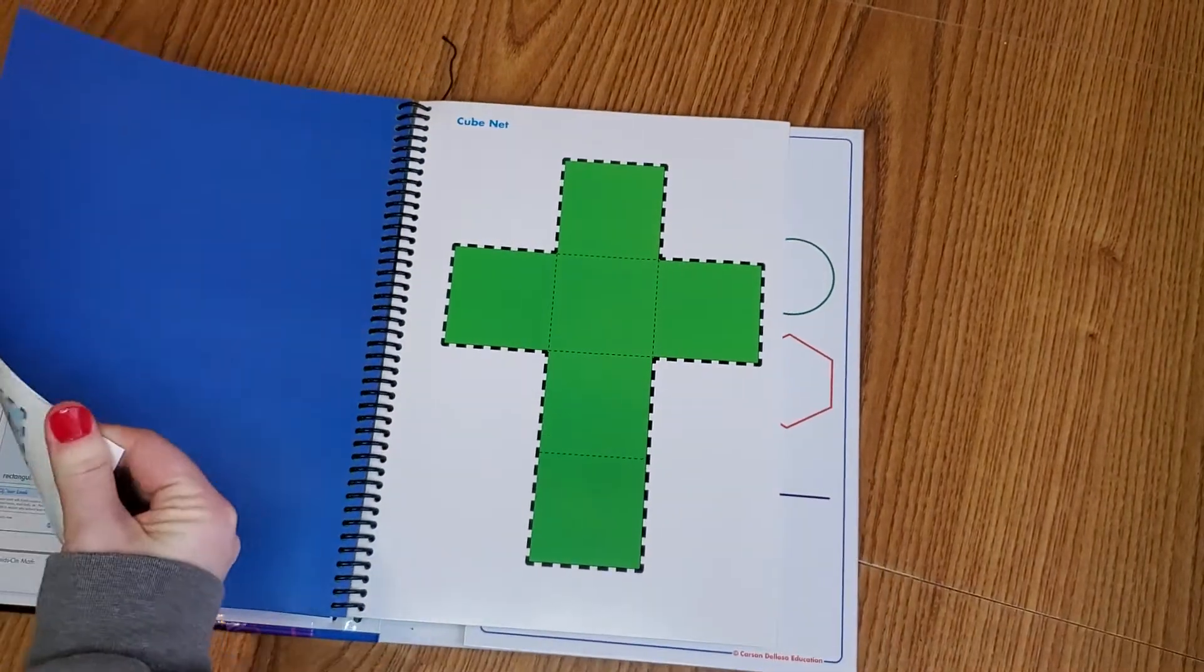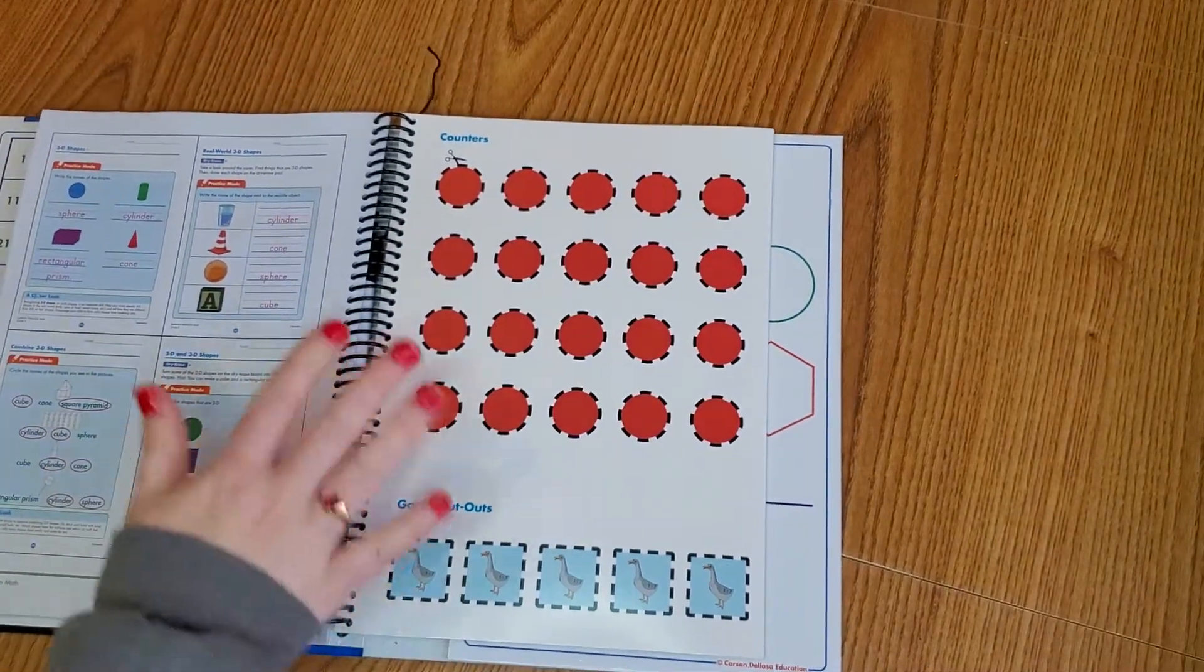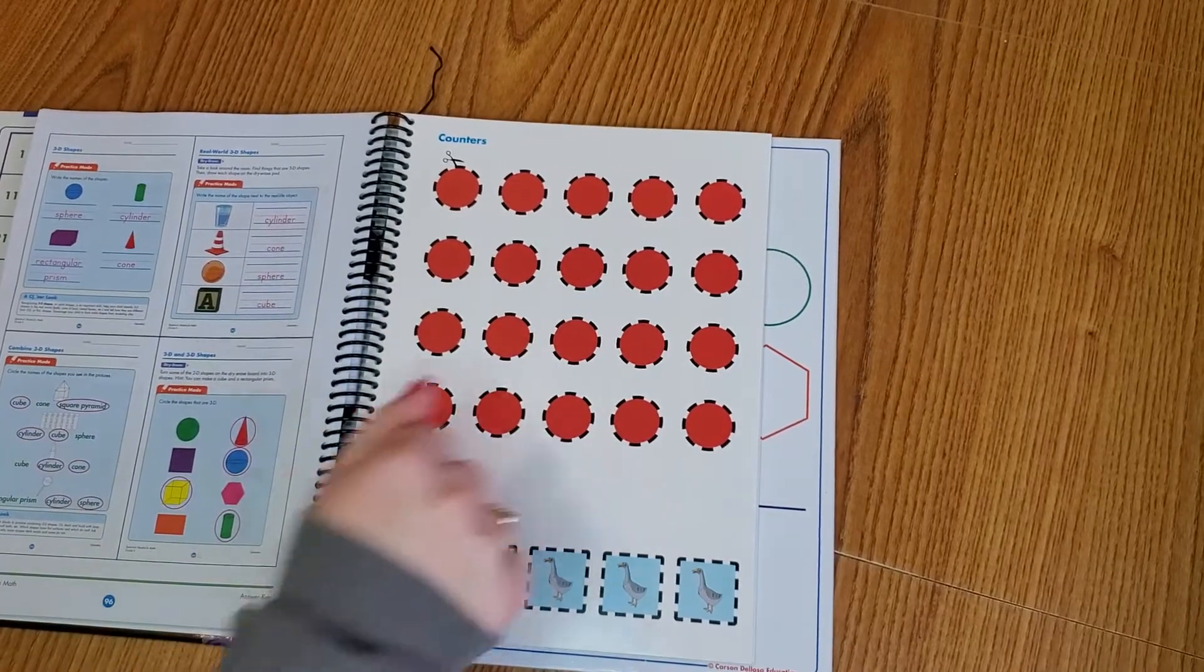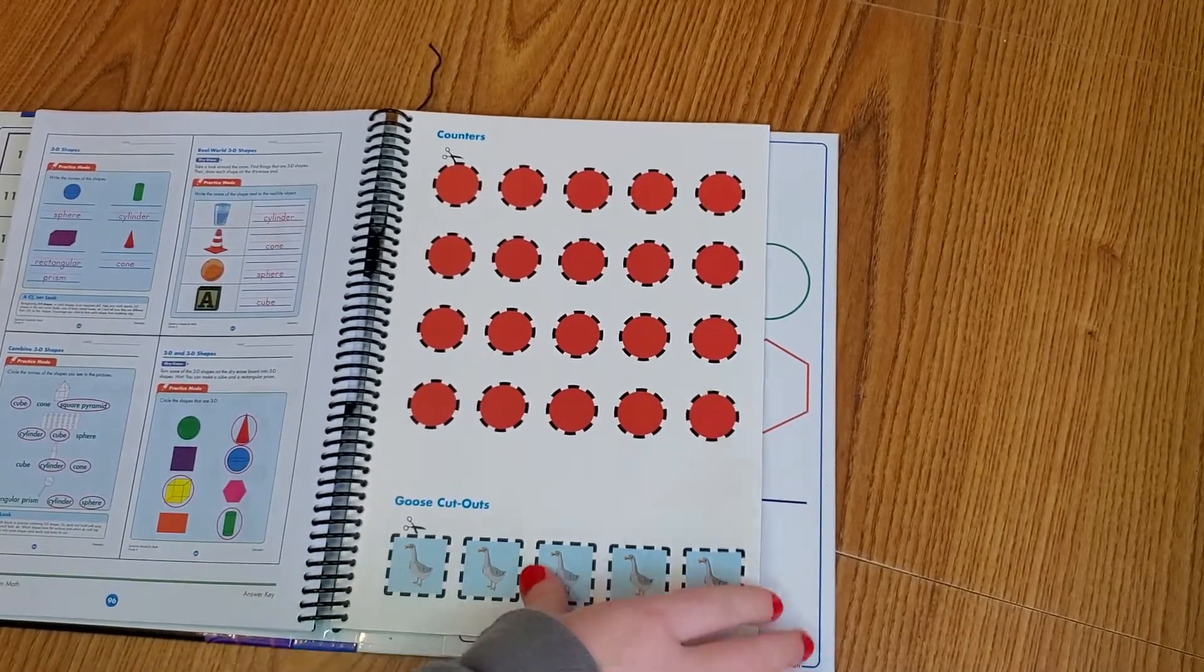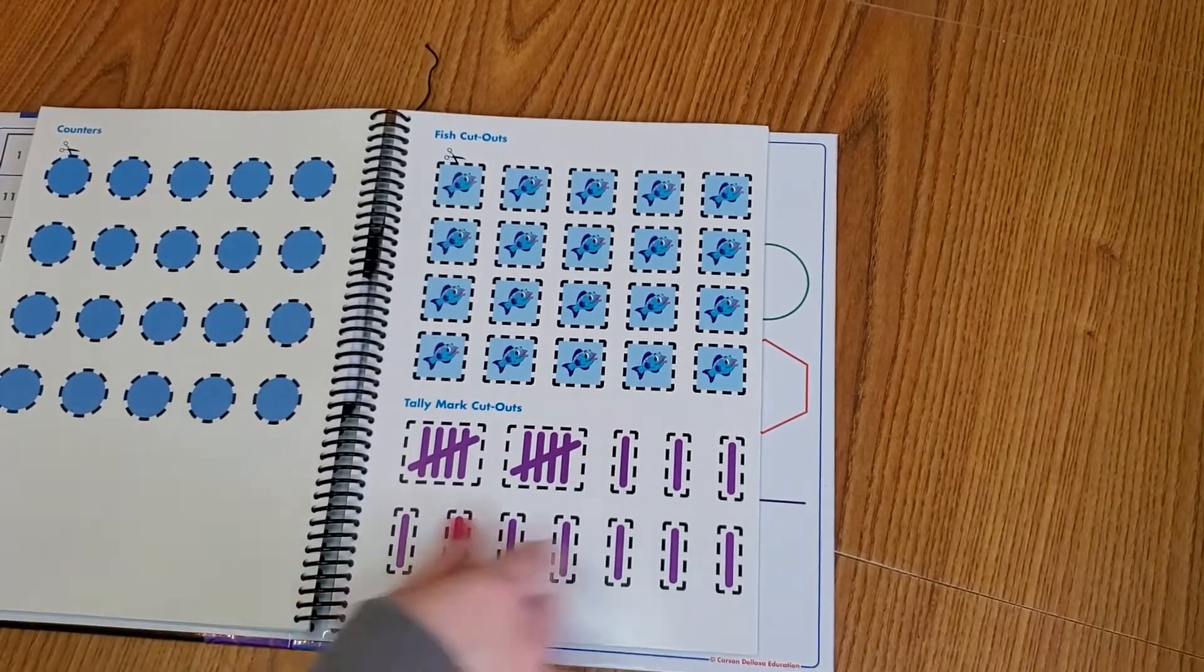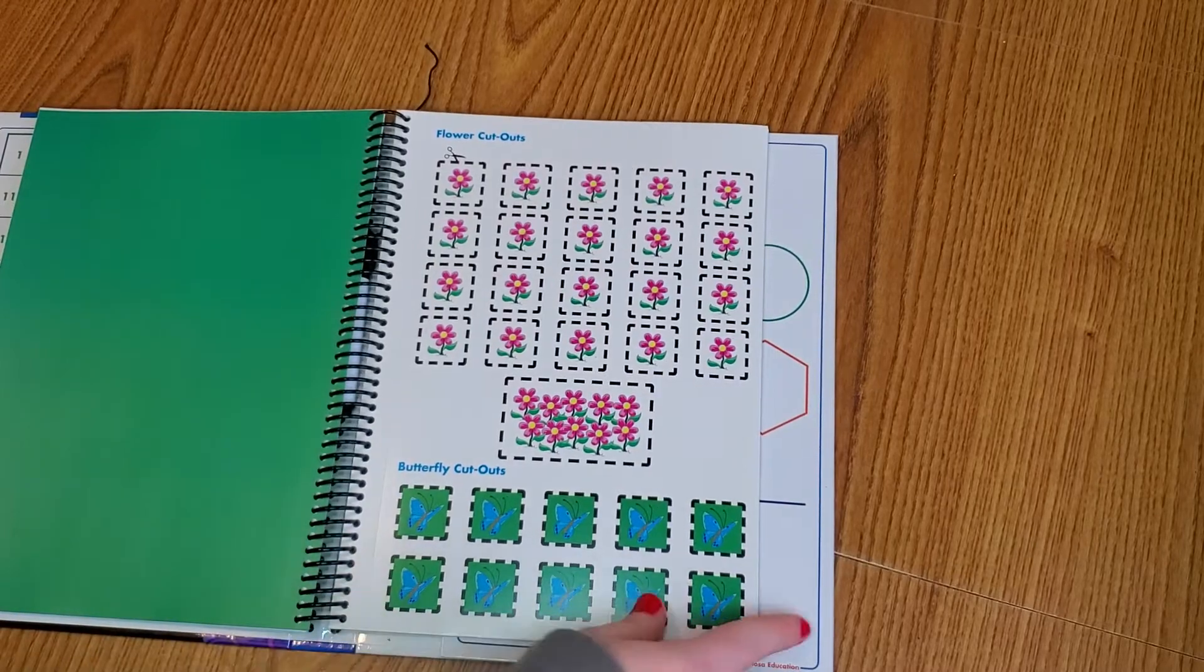I'll show you that really quick actually. There's a bunch of manipulatives. So there's the end of the answer key. There's counters you need for some, goose cutouts, blue counters, fish cutouts, tally marks, flowers, butterflies.